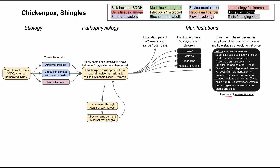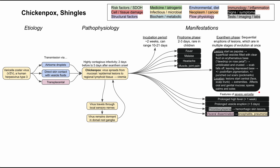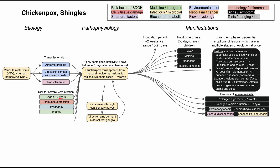There are features of severe varicella worth knowing, beyond the typical presentation in an unvaccinated child. These include prolonged high fever lasting over a week, prolonged vesicle eruption lasting more than five days, thrombocytopenia potentially resulting in hemorrhagic skin lesions like purpura, and visceral dissemination of the virus leading to encephalitis, pneumonia, and other complications. Risk factors for severe varicella include age 12 or older, immunocompromise, pregnancy, and infancy. Before the varicella vaccine, the disease was much worse in infants and older children or adults.